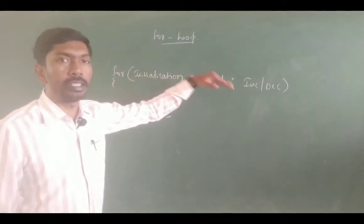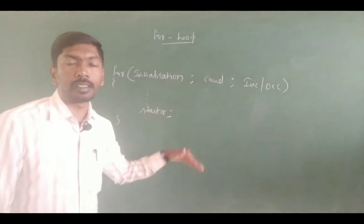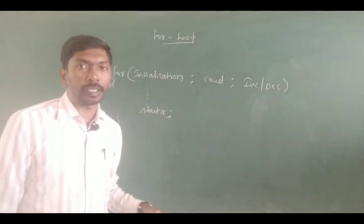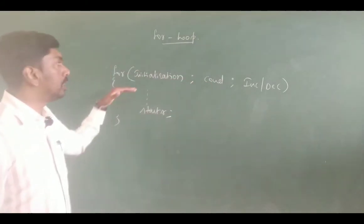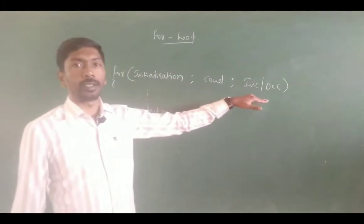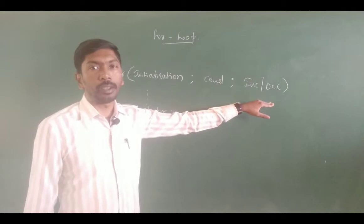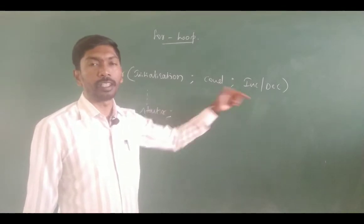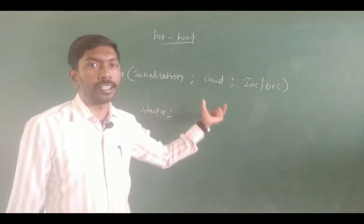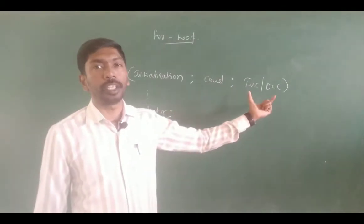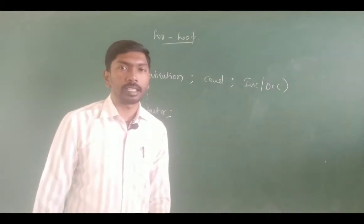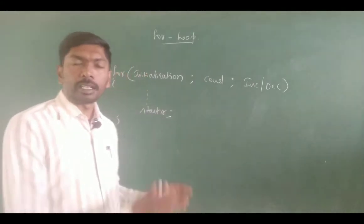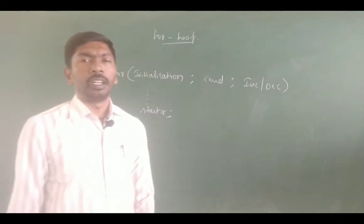In the while loop we have to write the three different parts on three different separate lines. But in a for loop we can write all of them — initialization, condition, and increment or decrement — in a single line. That is what is called the for loop.